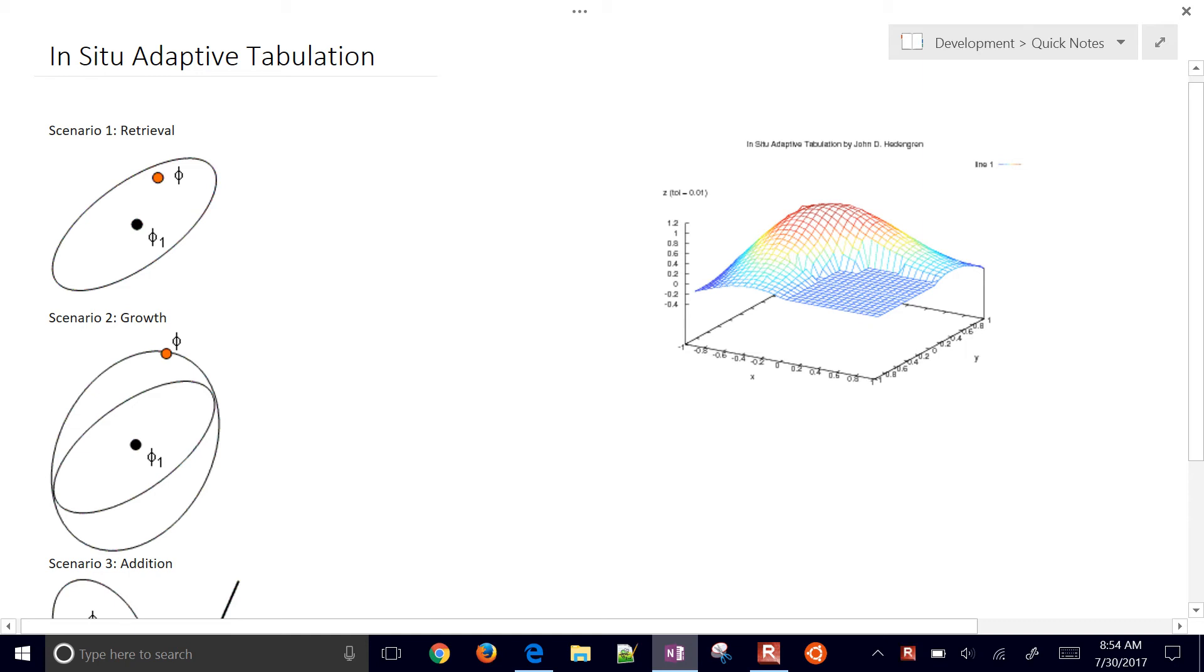This is an overview of the in-situ adaptive tabulation. We may have a function such as y equals f of x that we want to try to approximate. Let's say this is our function here. This is y as a function of x1 and maybe x2.